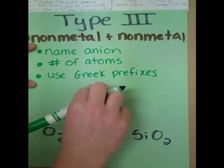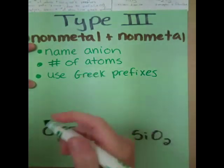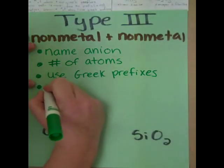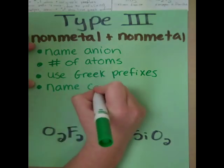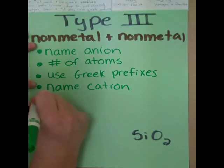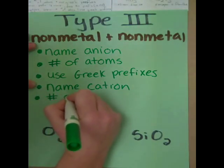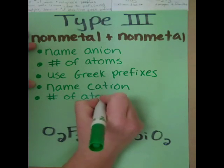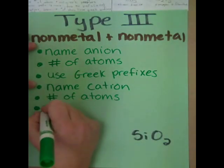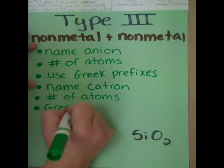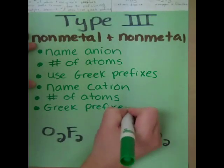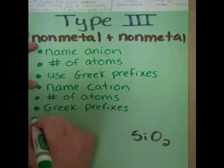Those Greek prefixes are mono-, di-, tri-, tetra-, and so on. After that, you name your second element, go through the same procedure of determining the number of atoms, use the Greek prefixes, and like always, add the -IDE ending to the second element.